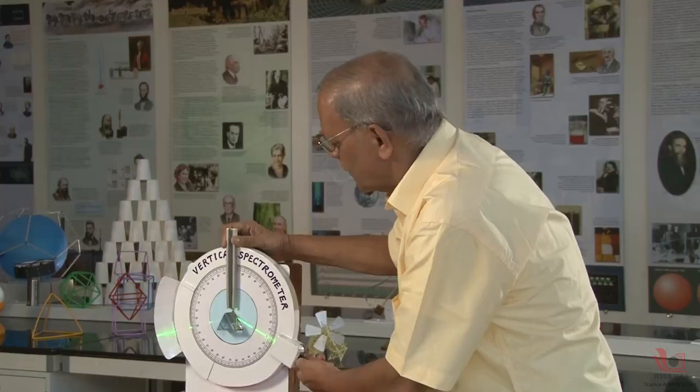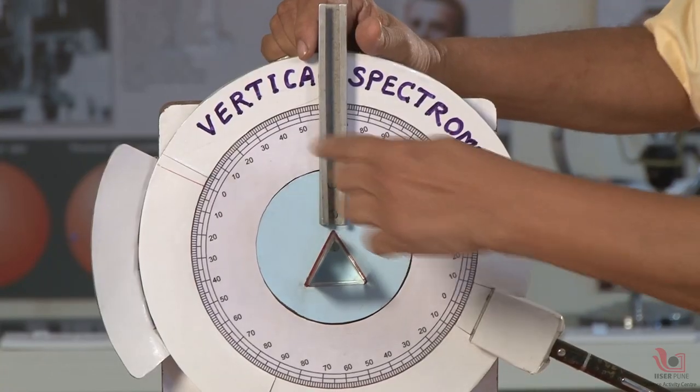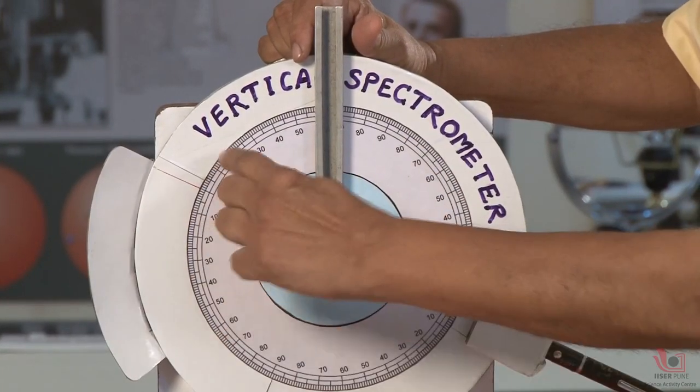So we have a change of direction. This is called deviation. The angle of deviation can be measured directly on the circular scale.